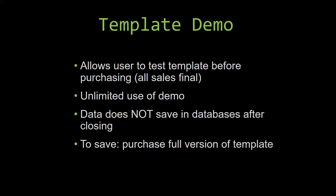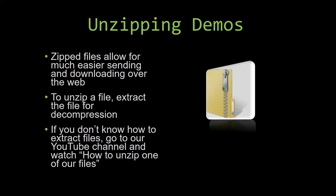Upon downloading a demo for one of our templates, you will have to unzip the downloadable file. Zipped files make it much easier to send and download large files over the web. Unzipping a file is a very simple step — all you have to do is extract the file so that you have access to the uncompressed file. If you do not know how to unzip a file, check out our YouTube channel and watch the how-to-unzip video tutorial. The link to that video will be in the description. So now, let us get into downloading and testing out one of our templates.